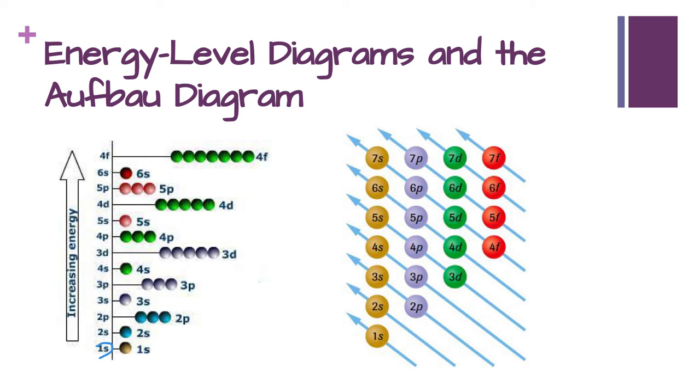The 1s gets filled first, followed by the 2s and the 2p, and then the 3s and the 3p. Then something weird happens where we kind of jog to the fourth energy level 4s, then we go back to 3d, then we go to 4p, and then weirder things start to happen as we get further away from the nucleus.